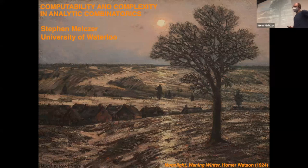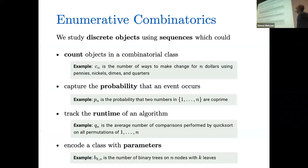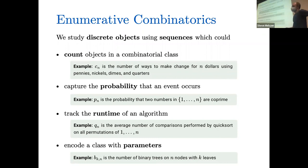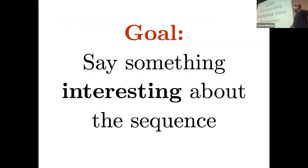Today I'm going to talk about some computability and complexity questions in analytic and enumerative combinatorics that are related to but a little different than some of the questions you might have seen before. In enumerative combinatorics we want to study discrete objects, and our tools will be sequences. A sequence could count the number of objects in a combinatorial class: CN could be the number of ways to make change for N dollars using pennies and quarters, PN could be the probability that two numbers in {1,...,N} are coprime, QN could be the average number of comparisons when you run Quicksort, or BKN could be the number of binary trees on N nodes with K leaves. Our goal is usually to say something interesting about the sequence.